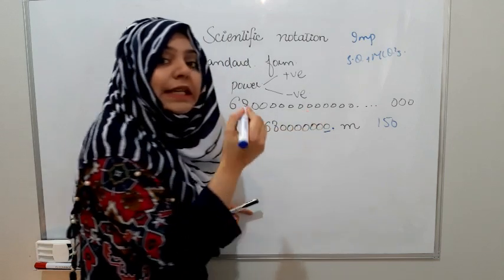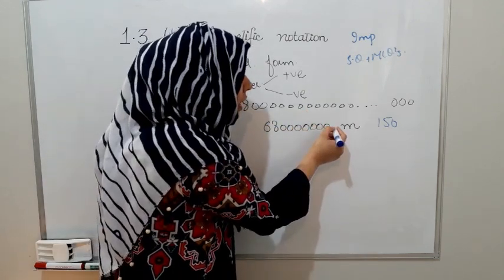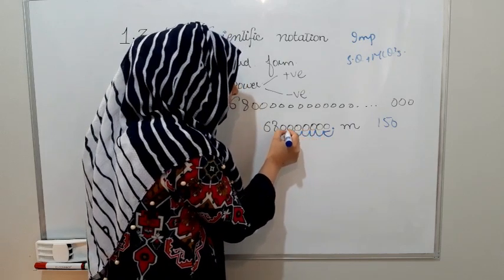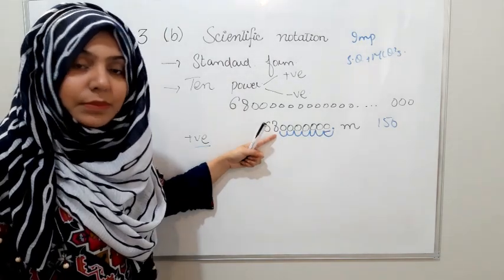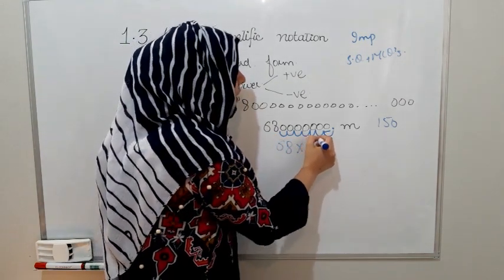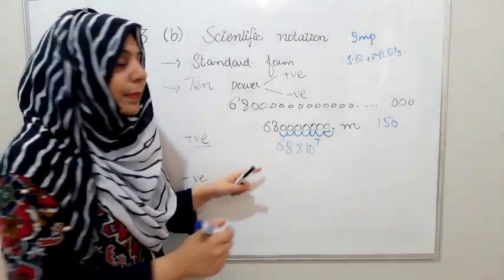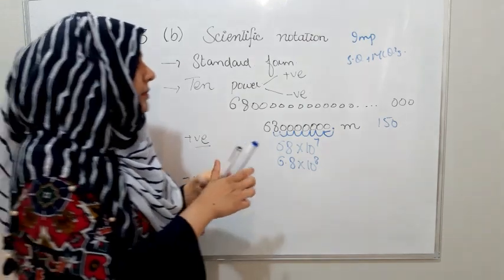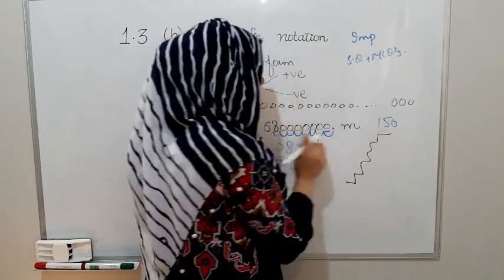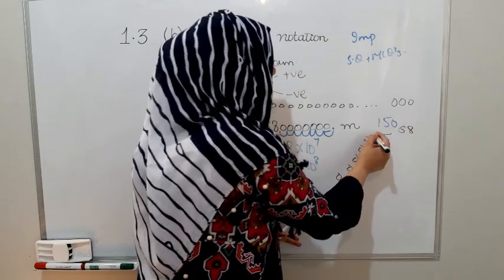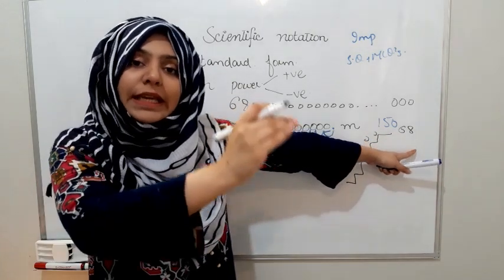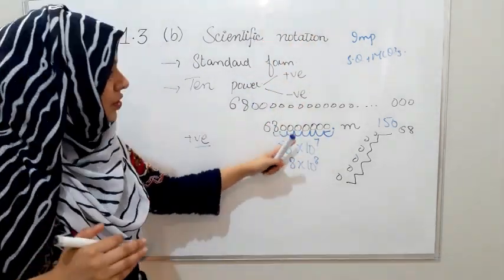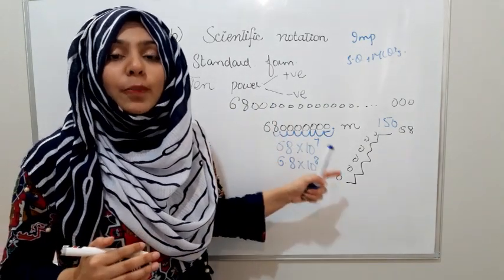If we start moving the decimal point to the left side, and we move it a certain number of places, the power will be positive. For the number 6800, moving the decimal left gives us 6.8. We moved it three places to the left, so we can say it is 6.8 × 10 to the power 3. When we move the decimal point to the left side, the power will always be positive.